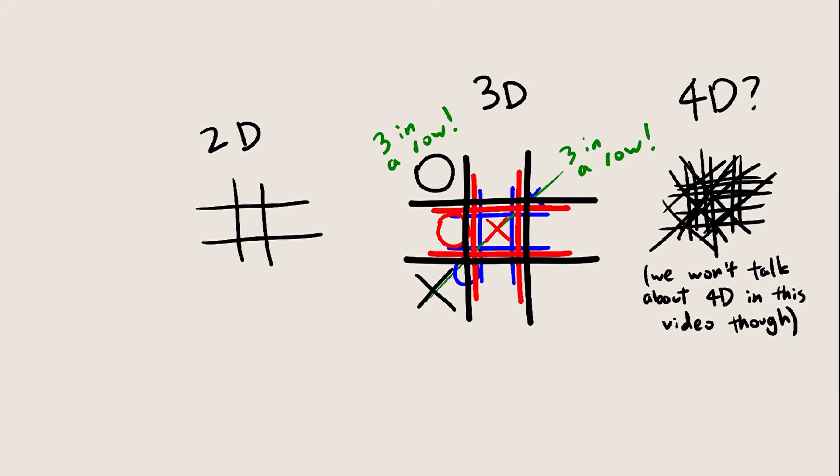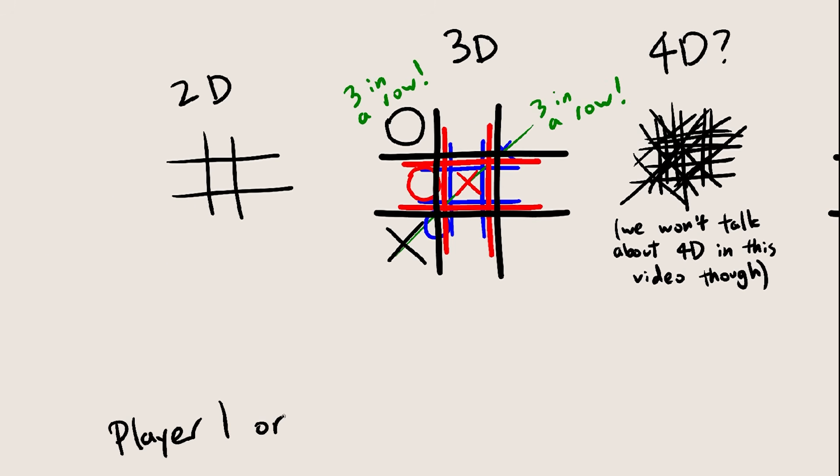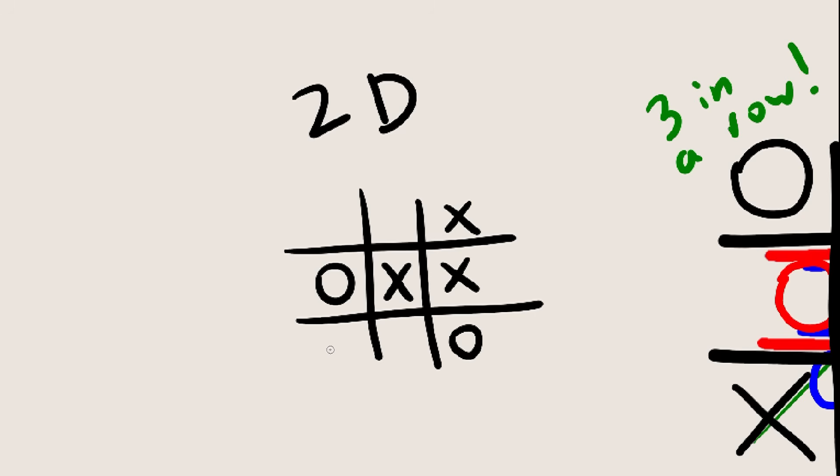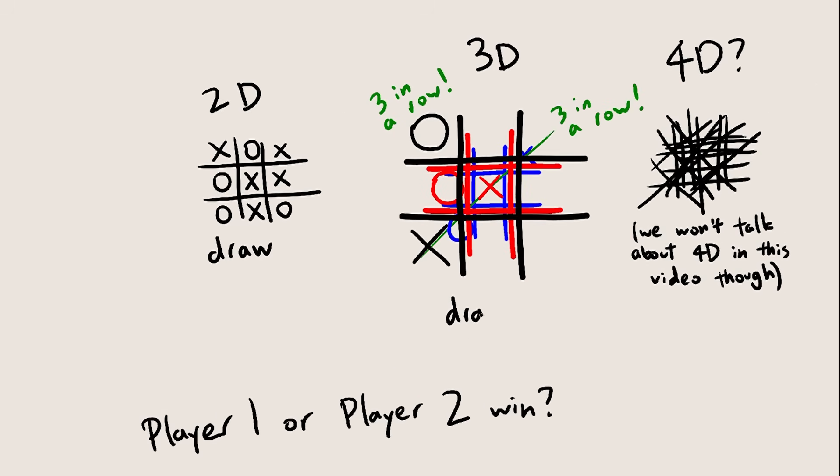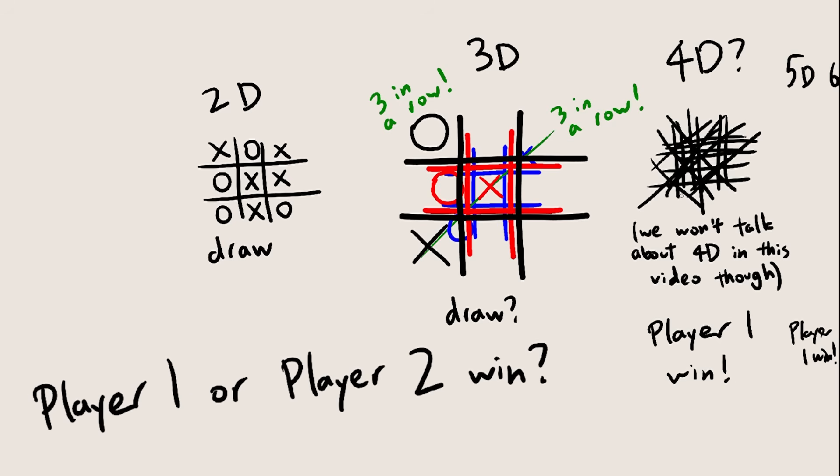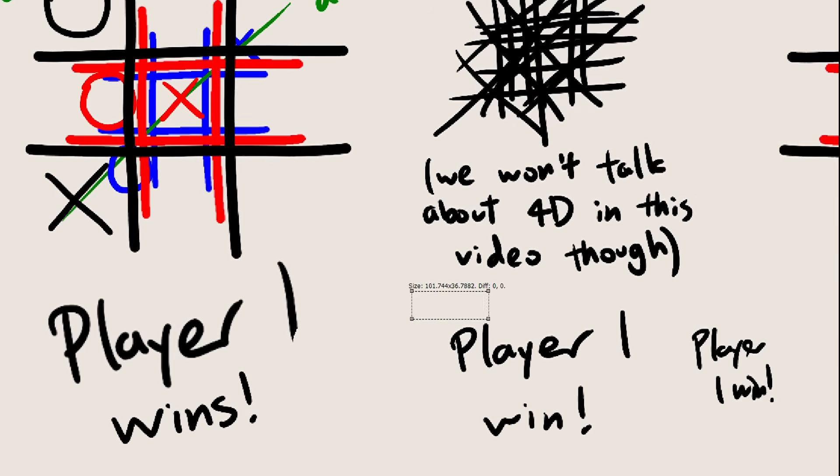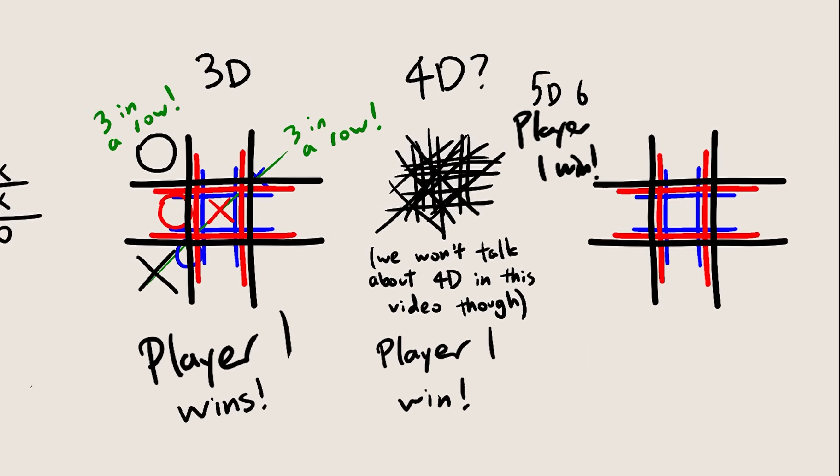Before we start though, and I'll tell you the answer right away, I want you to guess who has the advantage as the number of dimensions increases. In 2D tic-tac-toe, what you're used to, the game ends in a draw if both people play perfectly. Does the same happen in all higher dimensions? Or is there a point where player 1 starts having a winning strategy? Again, I'll tell you the answer right away, just take a guess. Okay, player 1, the person who goes first, wins in 3D, and they also win in every dimension higher than 3D.